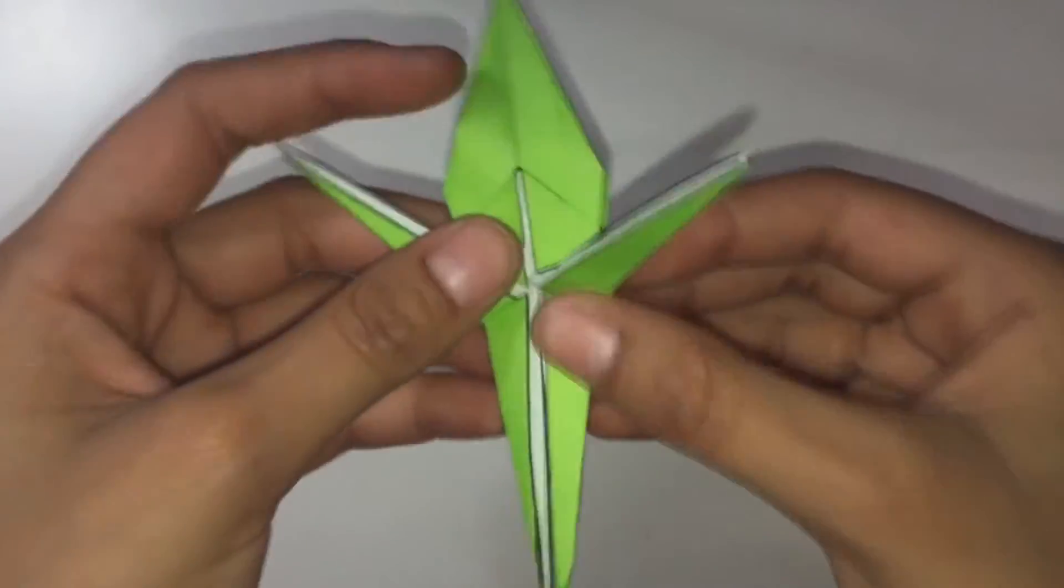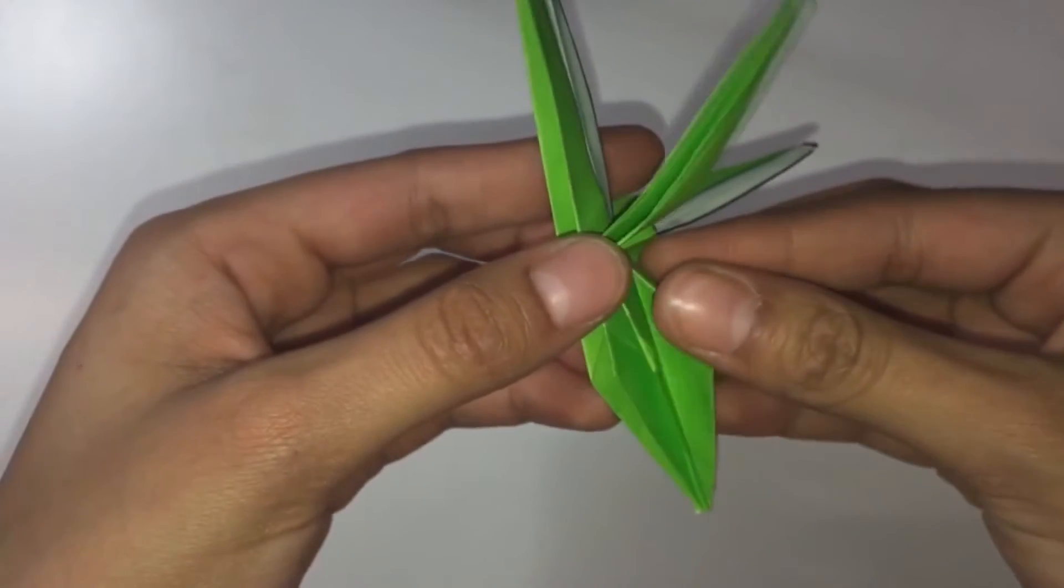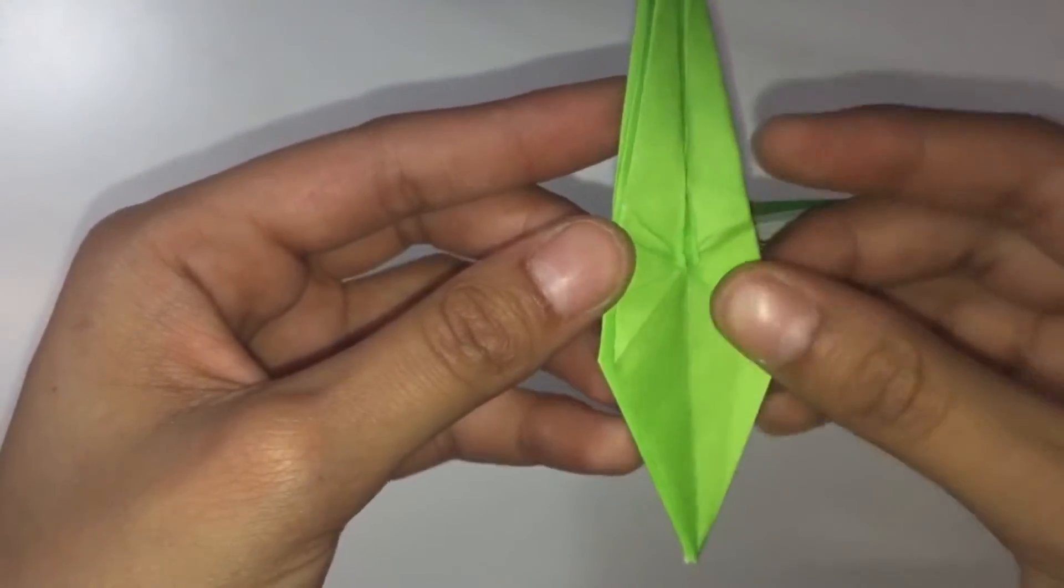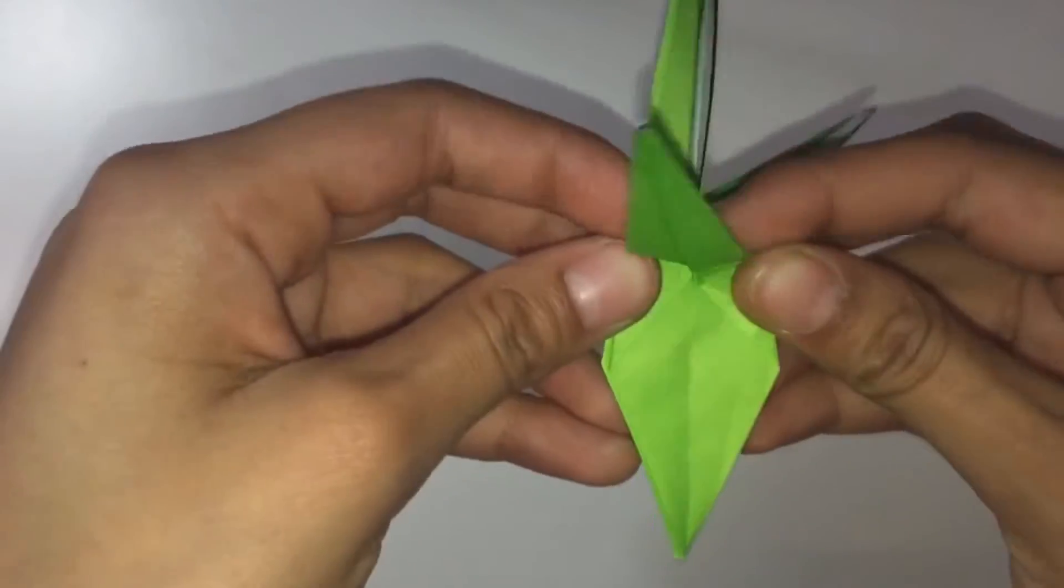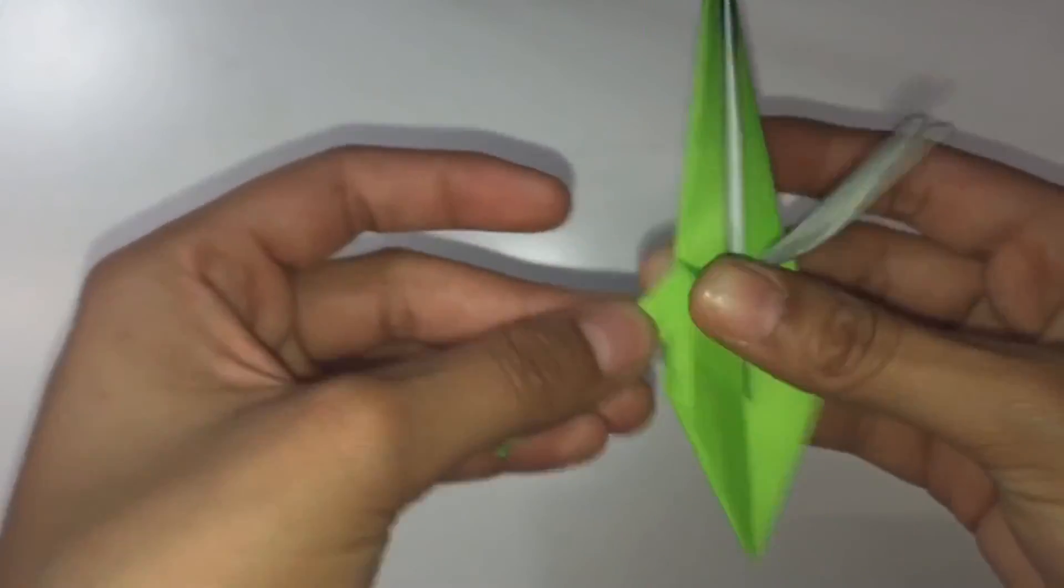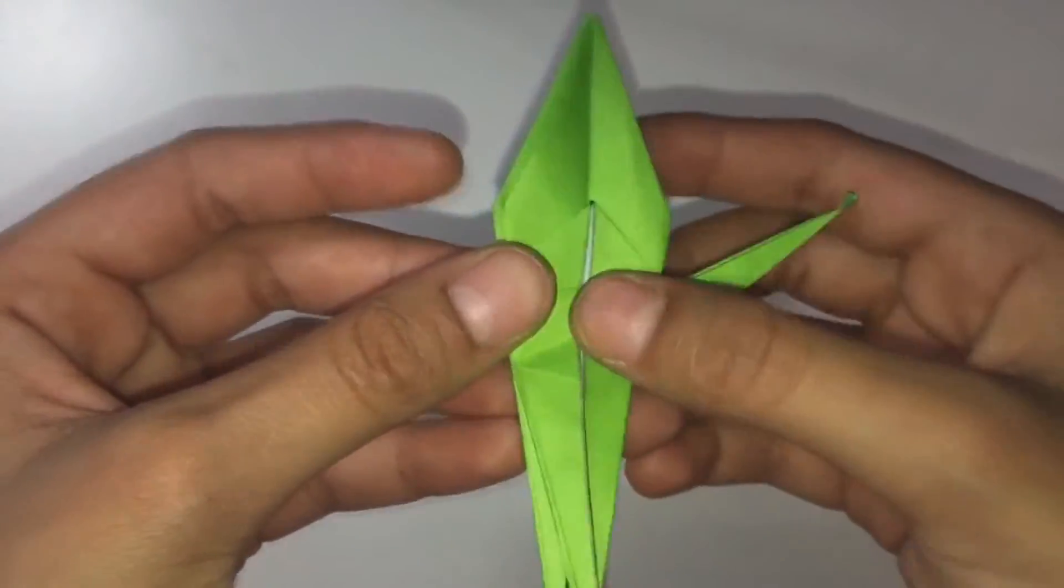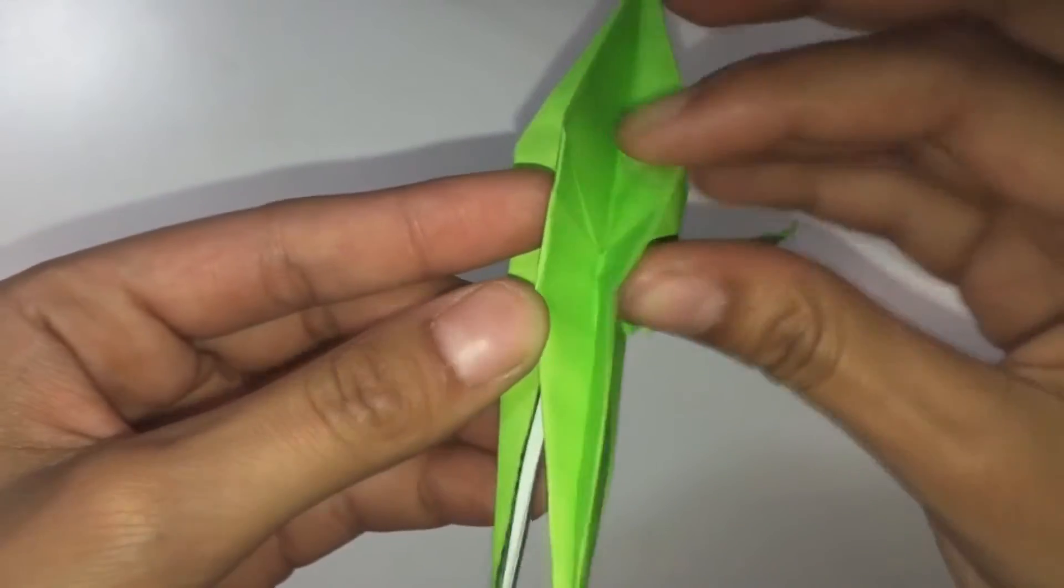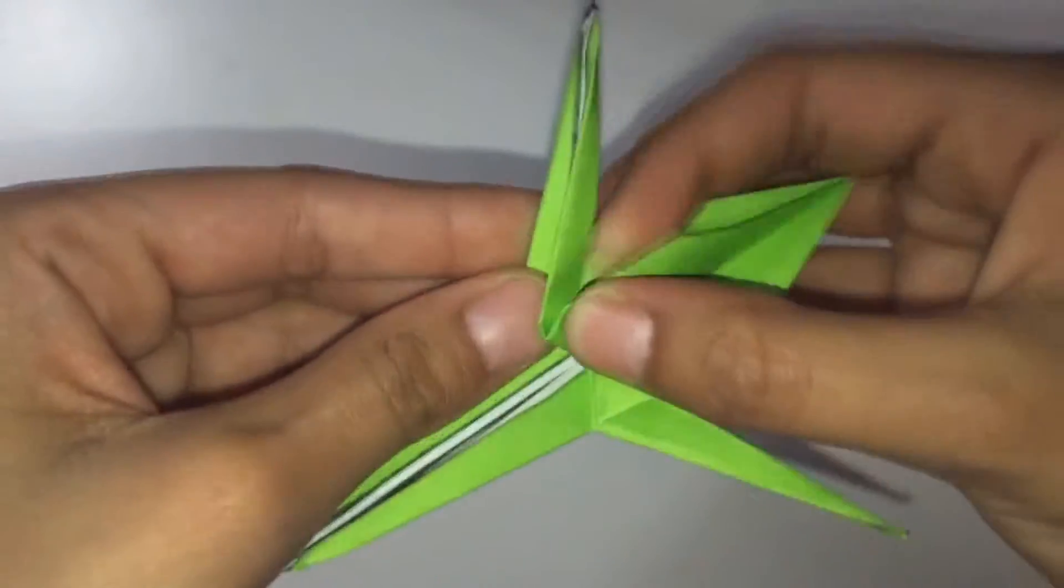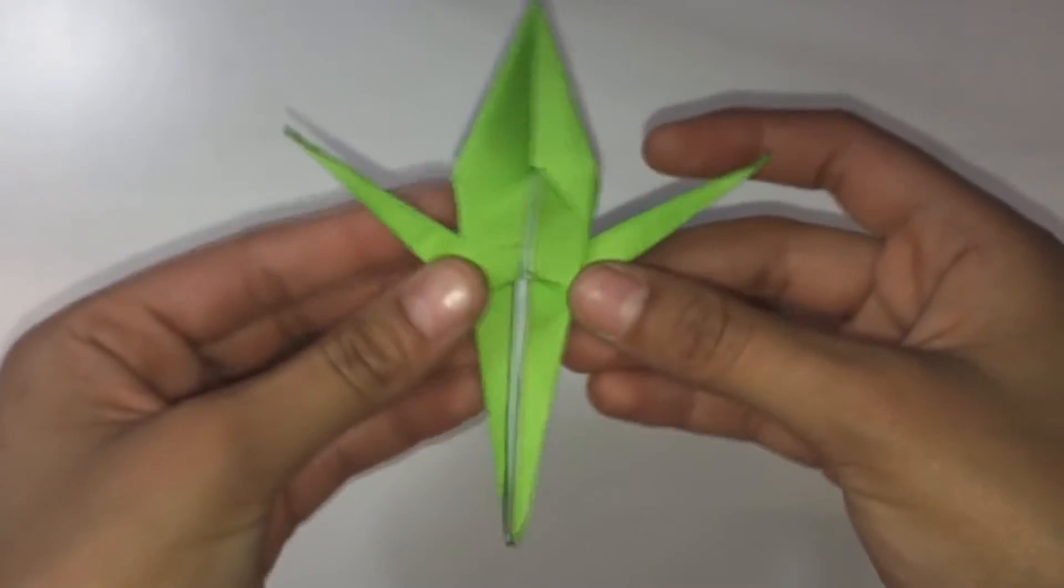Now the inside reverse fold. You're going to open it up and you'll have these two marks right here showing where you just folded over. Just push them in and fold in half. And now the leg is inside. We will do the same to the other side. And you have the two front legs done.